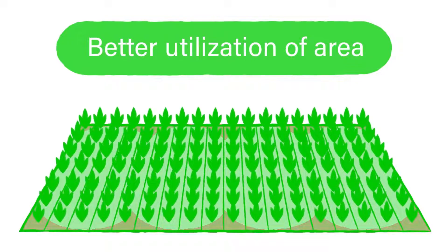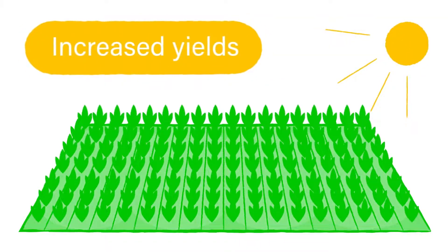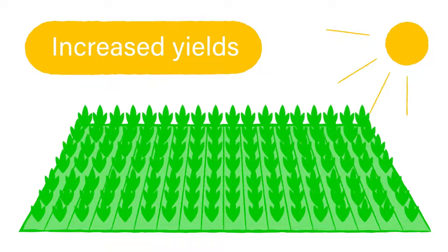This means you'll have better utilization of the area with no waste of water and more well-irrigated area, resulting in increased yields.